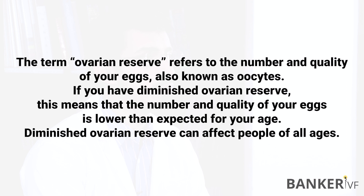Age and the ovarian reserve of the female partner are interrelated, and these two play a major role in determining a couple's ability to get pregnant. The ovarian reserve is a term that is generally used to define the ability of the ovary to produce eggs which are capable of fertilization and give a successful pregnancy.